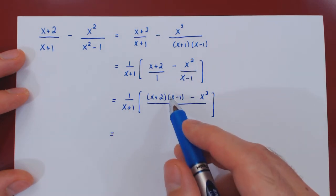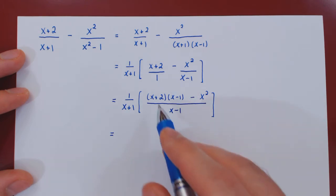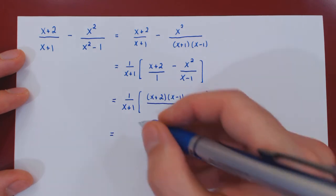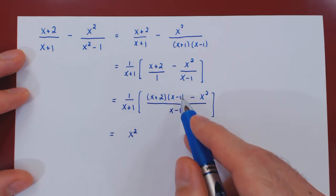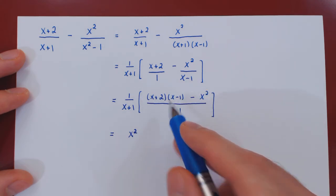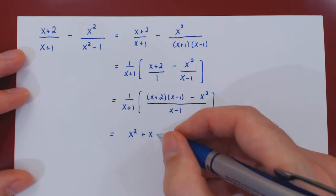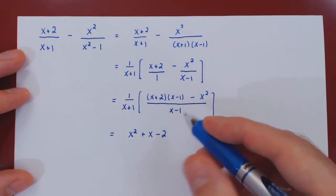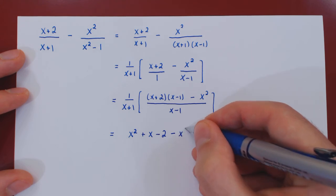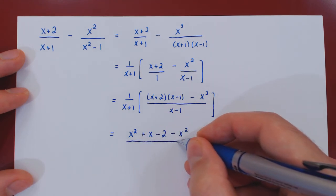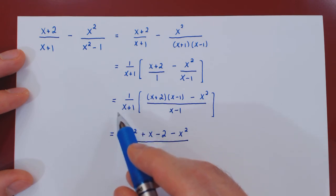Well, let's multiply and see if we have some cancellation. So on top we'll have x squared, negative x plus 2x is plus x, and then negative 2, negative x squared, and on the denominator, leaving things factored, we have x plus 1 times x minus 1.